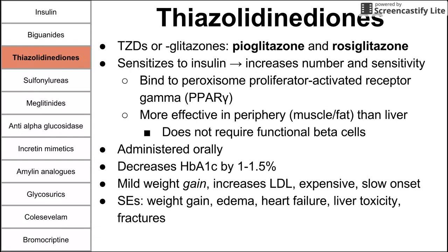Side effects of the glitazones include weight gain, edema, heart failure, liver toxicity, and bone fractures. However, they are safe with renal failure. So if a patient with DM2 has renal failure and can't take metformin, you can give them one of the glitazones instead.